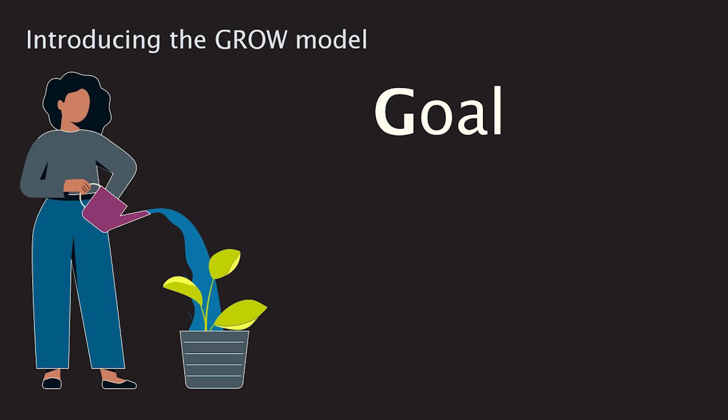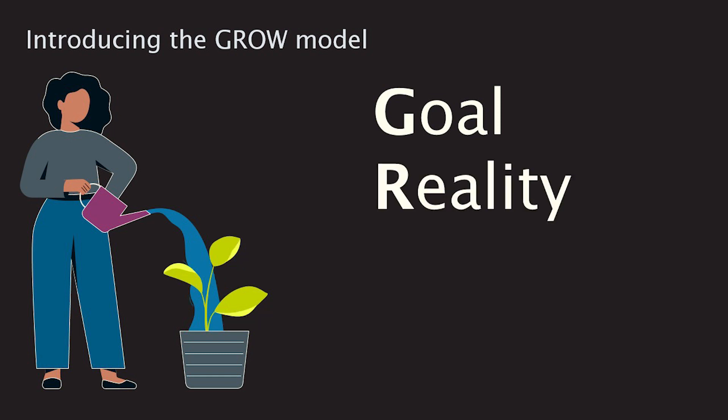The second stage of the GROW model is to face the reality of the current situation. This means you need to reflect on the action taken so far and what's going on around you to move towards that goal. Is there something getting in the way? The reality stage helps you identify the challenges and gaps that stop you from achieving your goal.